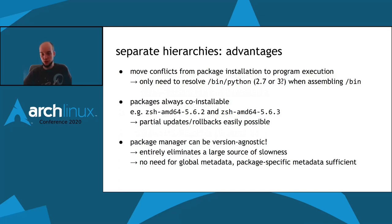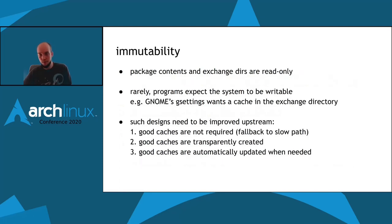In terms of speed, this also means our package manager can be entirely version agnostic, which eliminates a large source of slowness — namely dependency resolution. There is no need in DISTRI for global metadata; package-specific metadata is enough to be downloaded at package installation time. The immutability means that package contents and exchange directory contents are read-only. Rarely, programs expect the system to be writable — for example, GNOME's gsettings schema wants a writable cache directory in the exchange directory. I think such designs need to be improved upstream.